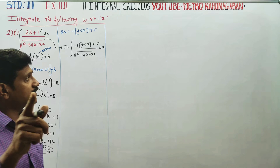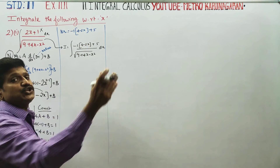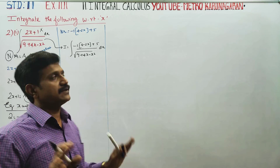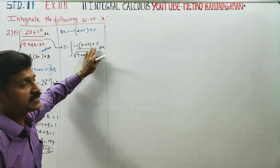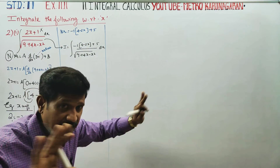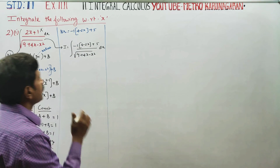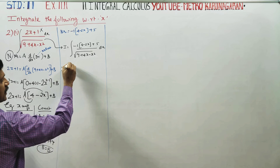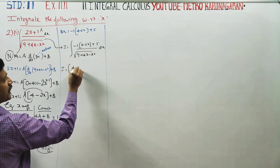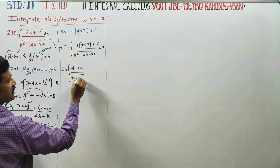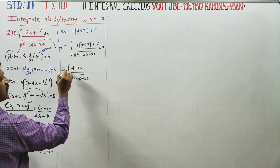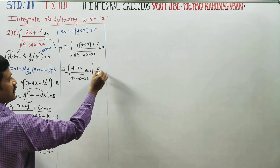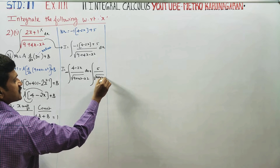We split this into two integrals: I = ∫ (4 − 2X) / √(9 + 4X − X²) dx, with the −1 factor placed outside, plus ∫ 5 / √(9 + 4X − X²) dx. These are two separate parts to solve.